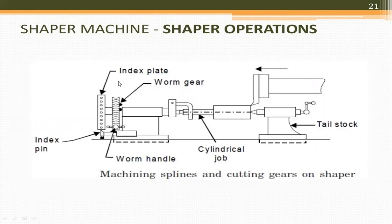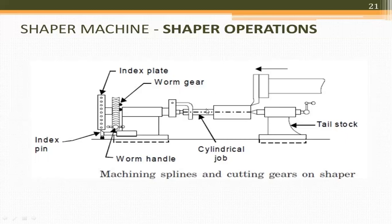For gear cutting on the Shaper, an index plate, index pin, and worm gear are used along with a cylindrical job. The job is connected to the tailstock. The RAM moves forward to take a cut, then returns without cutting — the return stroke is idle.